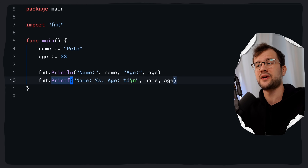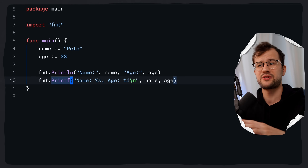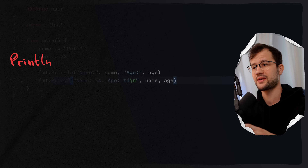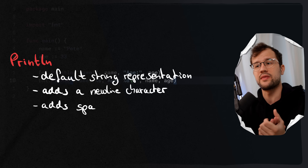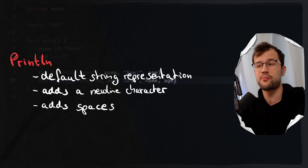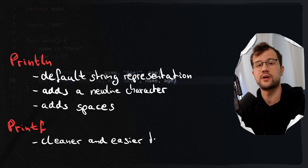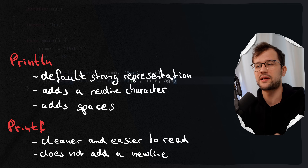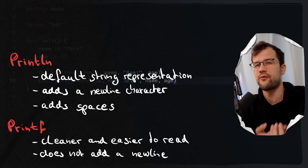It's worth noting that Printf does not add a new line at the end automatically, so we have to add \n manually. Println always adds a new line at the end. When should you use Println versus Printf? Println converts values to their default string representation, adds a newline, and automatically inserts spaces between arguments — making it a great go-to option for debugging. Printf is better when you want to control the formatting of your string.